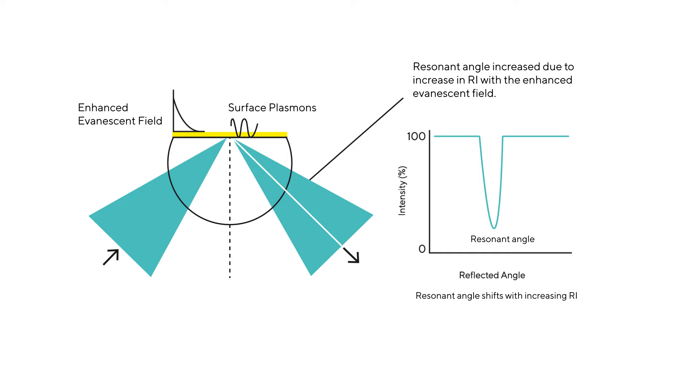This occurs because light interacts with delocalized electrons in the thin metal film which are undergoing oscillation, called a surface plasmon.